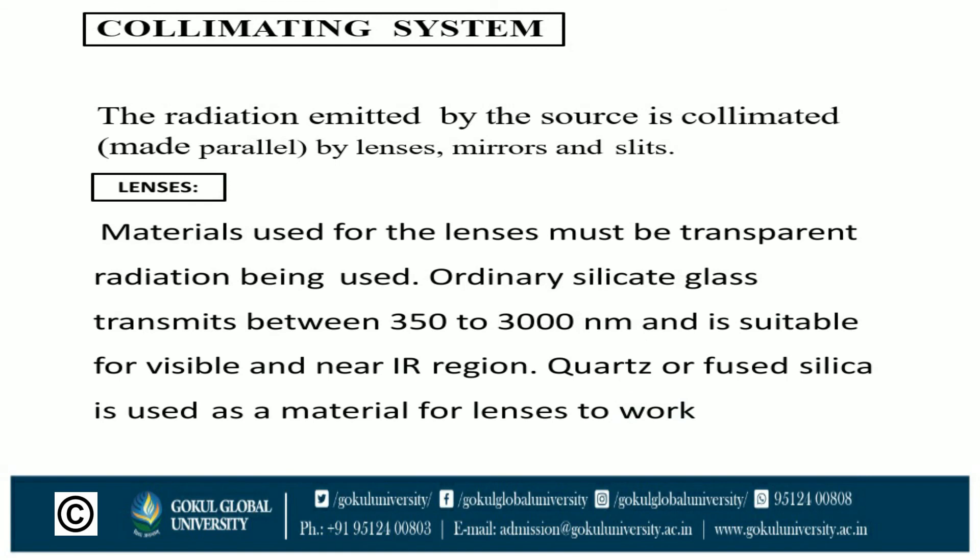Now the collimating system. The radiation emitted by the source is collimated — made parallel — by lenses, mirrors, and slits. First, discussing lenses: the materials used for lenses must be transparent to the radiation being used.